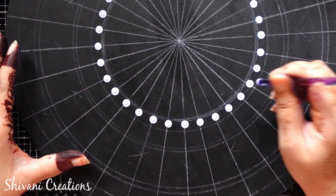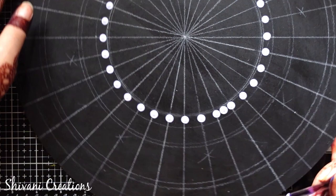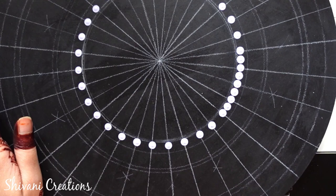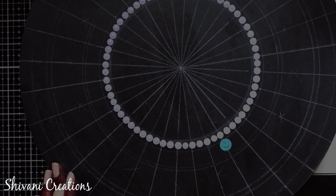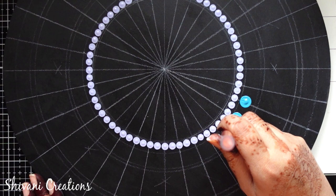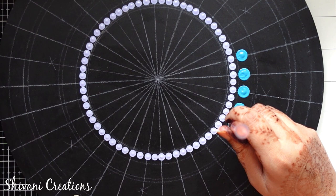Now between these two dots I am putting one more dot of the same size. Now for the next row I am here taking teal color and using little big size of mandala tool and putting dots on each line so that we will get total 32 dots.